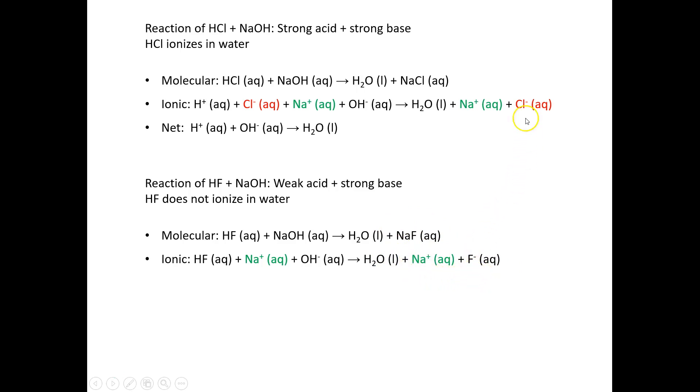But now you'll notice that instead of having two spectator ions like I had up here—chloride the same on both sides, sodium the same on both sides—I only have one spectator ion, which is the sodium, because it's the only thing that looks the same on both sides. Fluoride here is dissociated into ions, but in hydrofluoric acid it's not dissociated into ions, so I can't cancel it out. So I'm only canceling out the sodium, and when I get to the net ionic equation, it looks different. In this case, it's HF + OH⁻ → H₂O + F⁻.